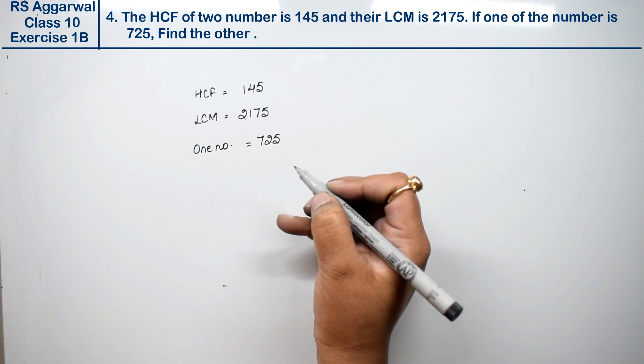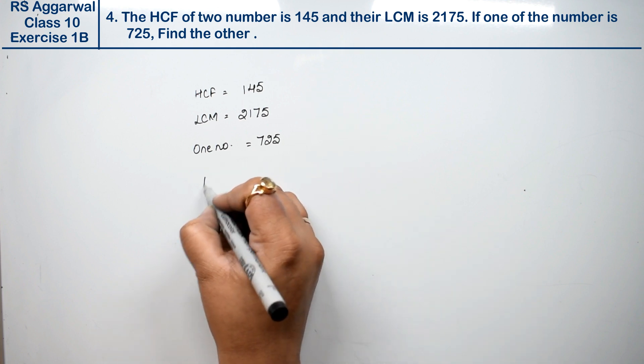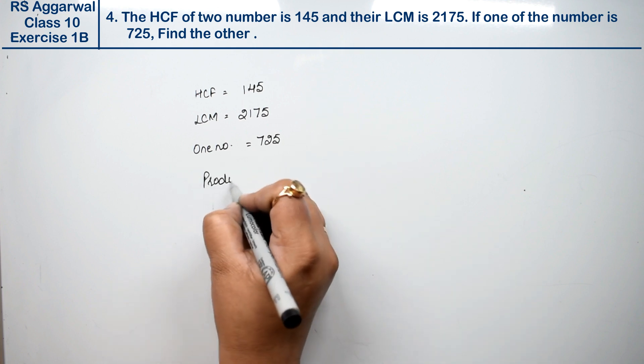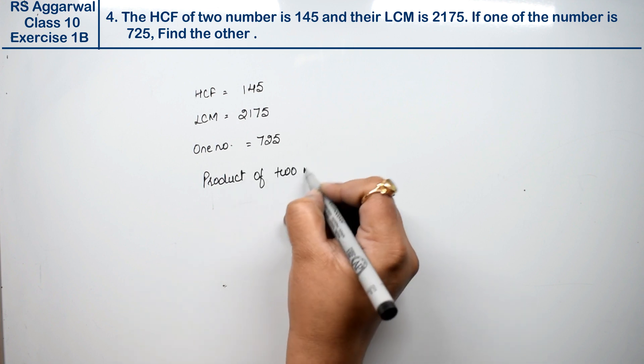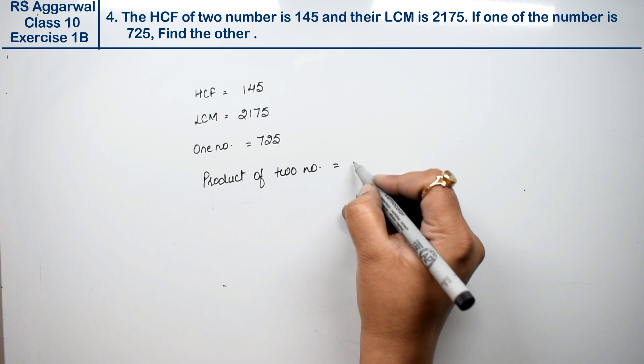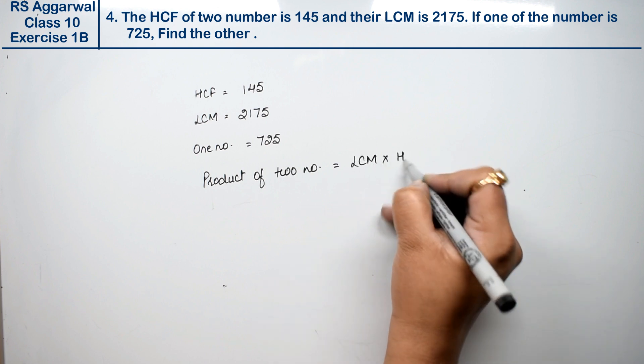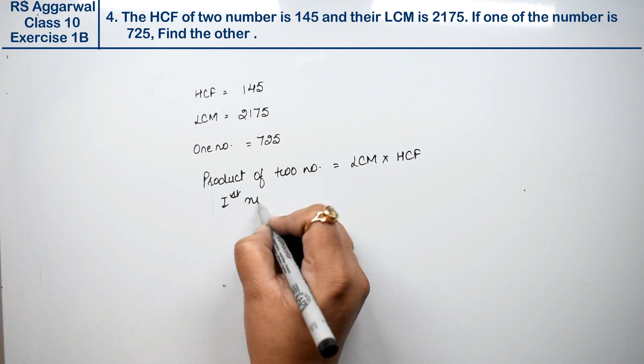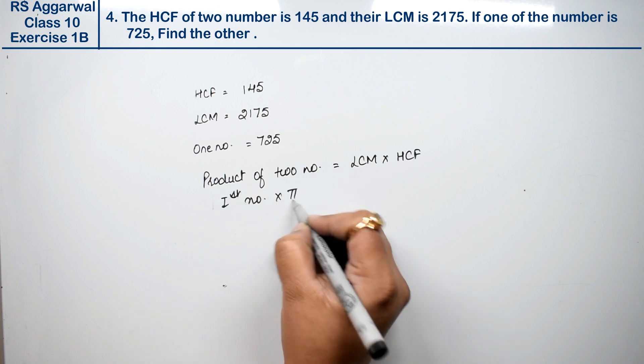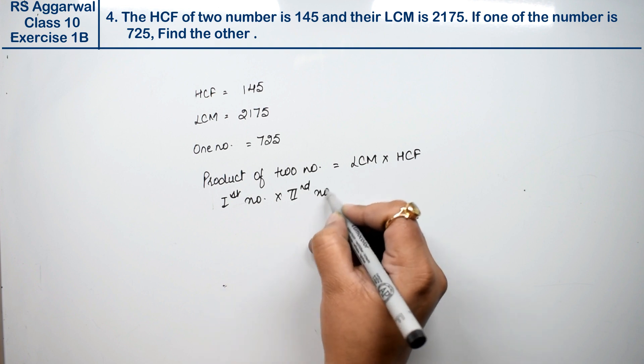Find the other number. We know that the product of two numbers equals LCM times HCF. So first number times second number equals what?